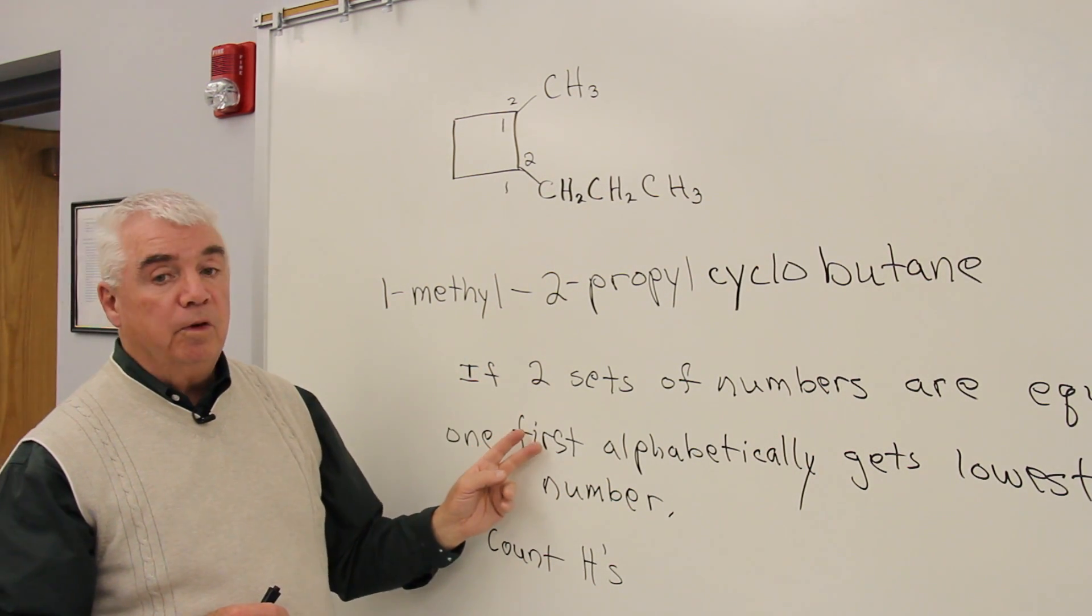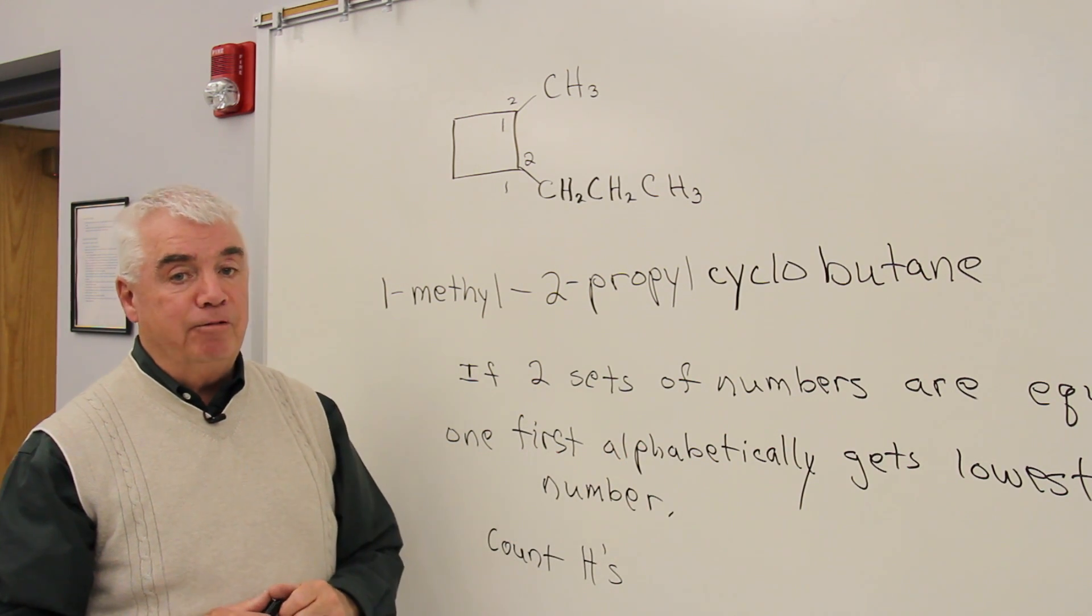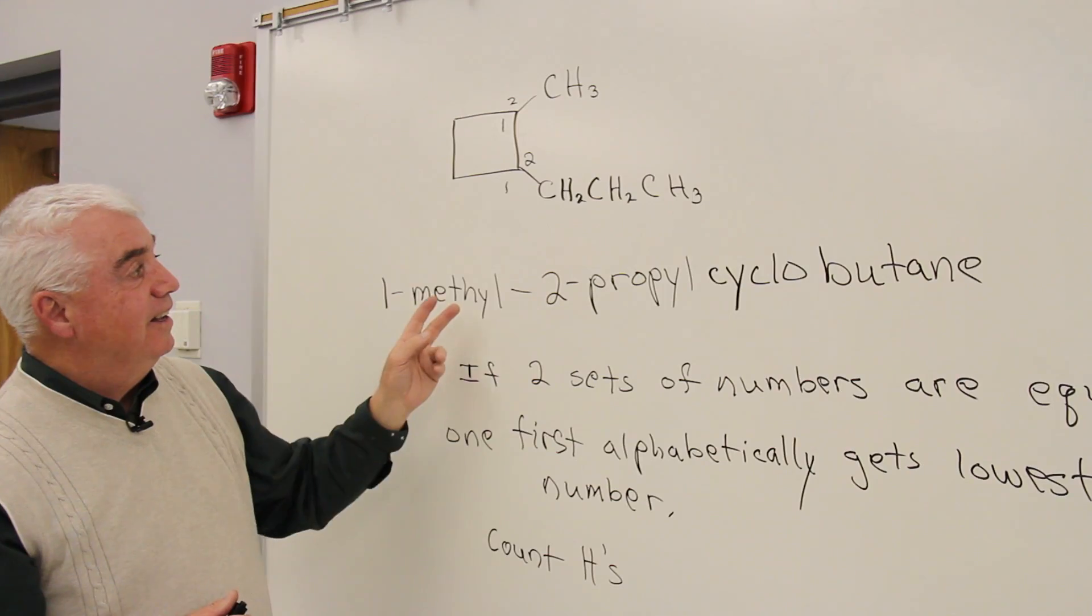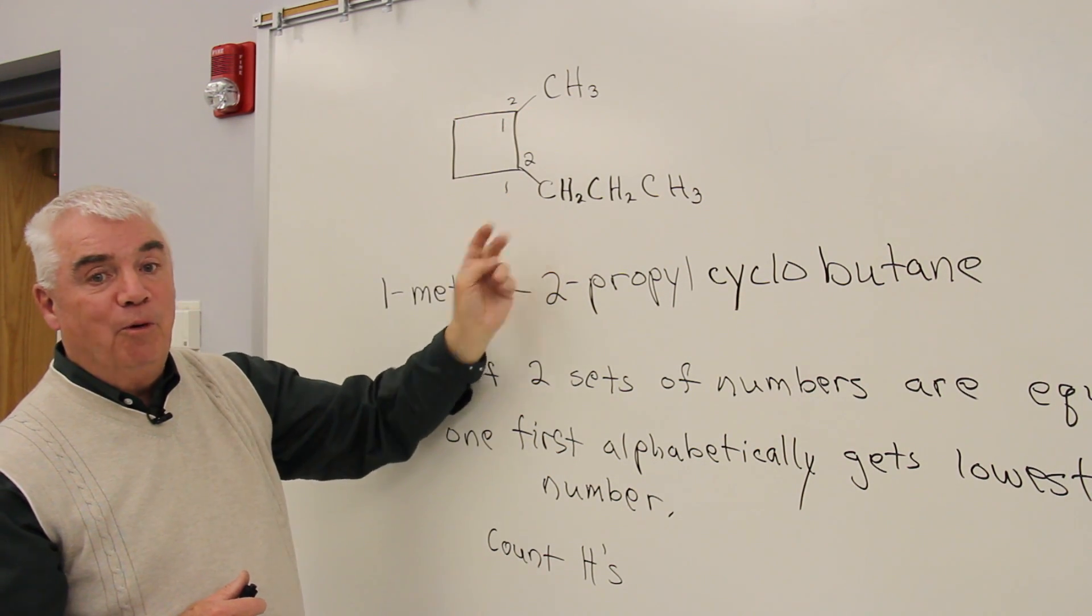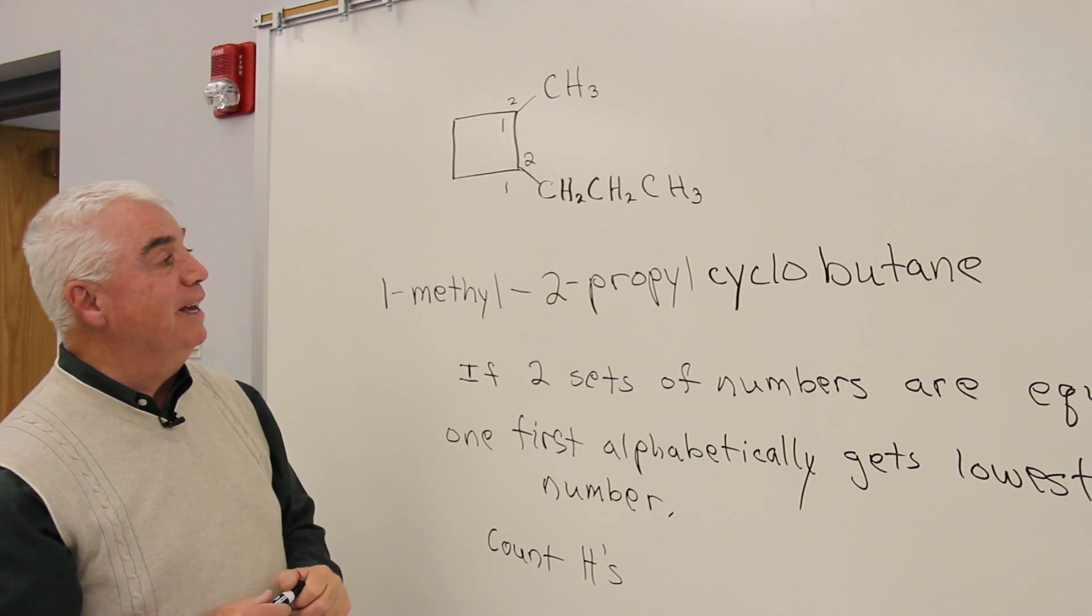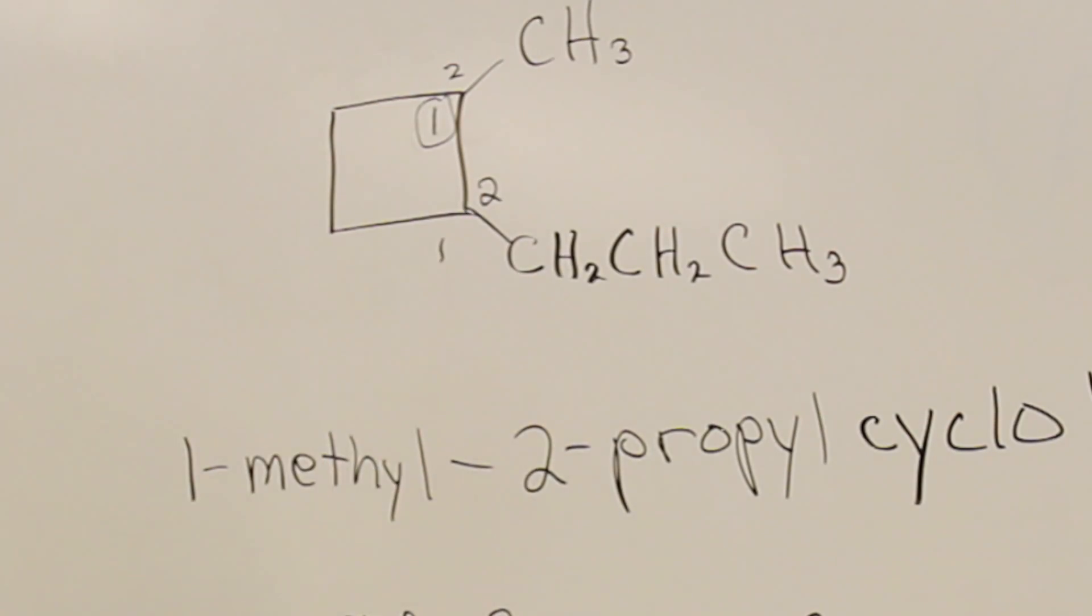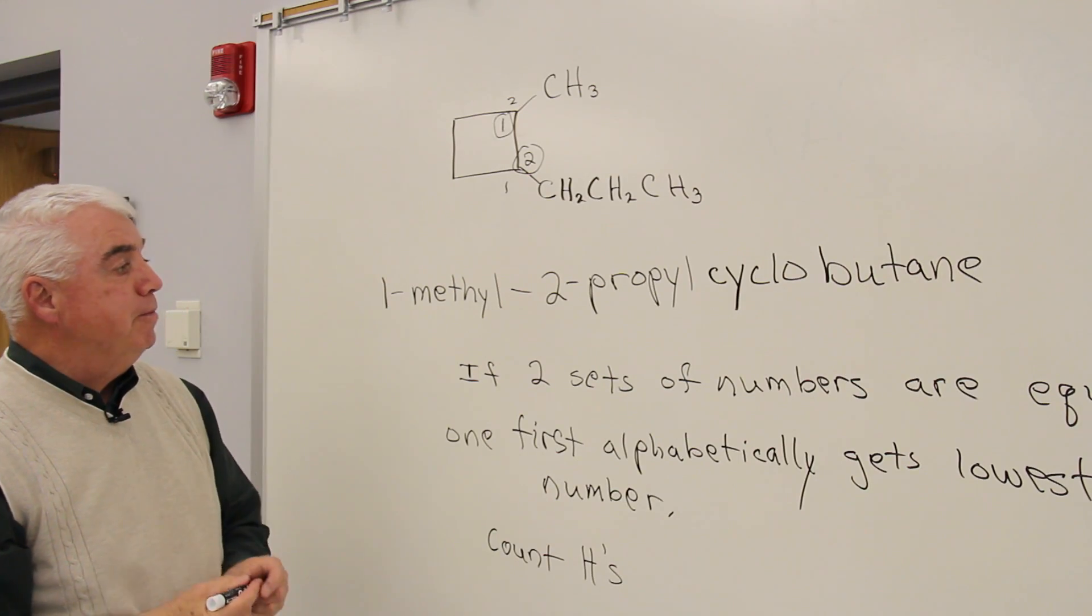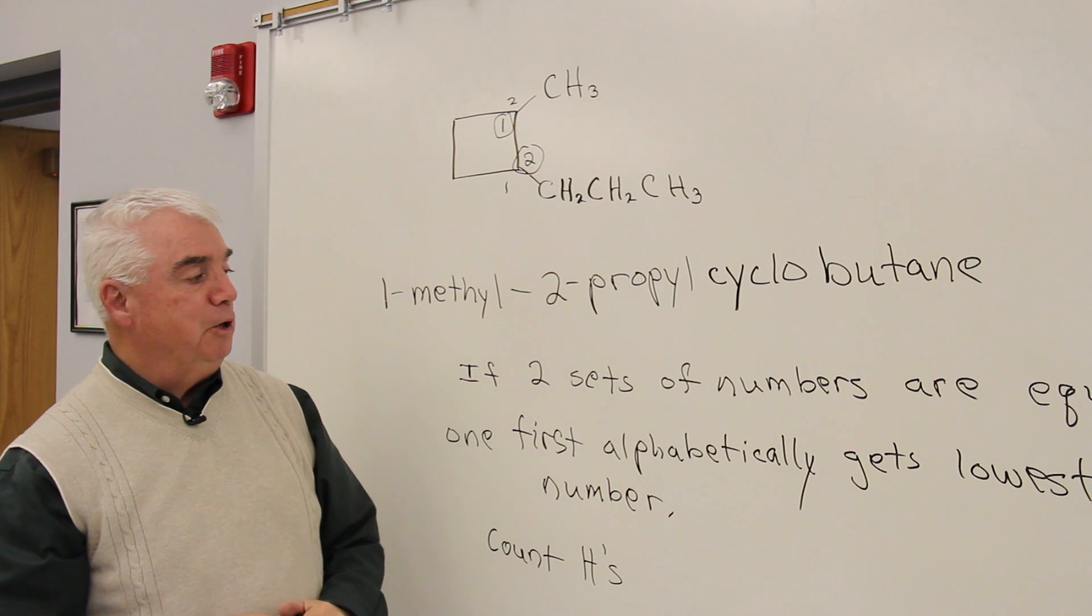Then we let the group that comes first alphabetically have the lowest number. So in this case, methyl beats out propyl. M comes before P alphabetically. So this is position one, and this is position two. The name then is 1-methyl, 2-propyl cyclobutane.